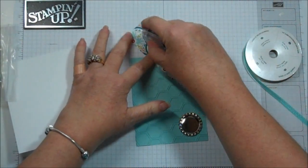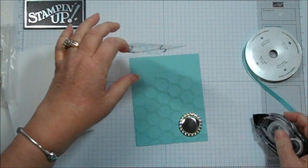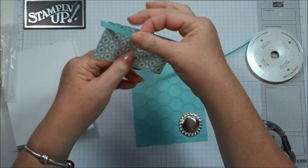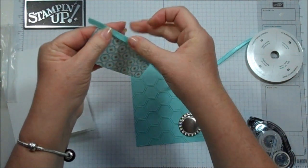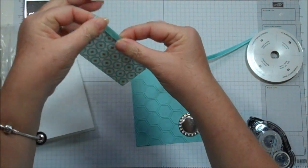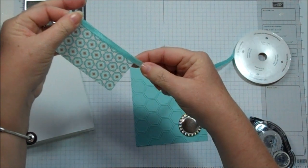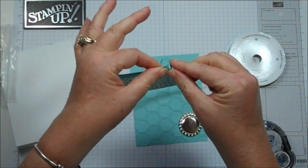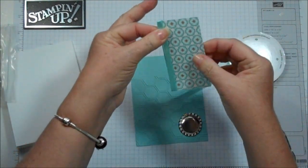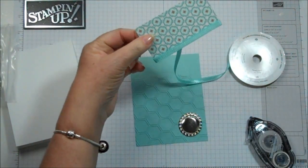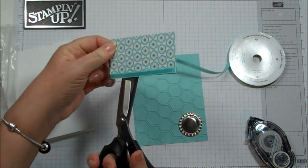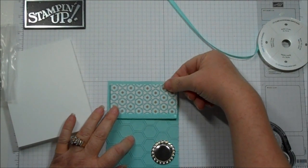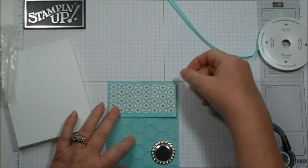So I'm just going to put some adhesive on the back side of the designer paper. And then I'm going to wrap the Pool Party ribbon around the edge. Just like that. Go ahead and cut that off. I'm going to put this right onto the cardstock. Just like that.